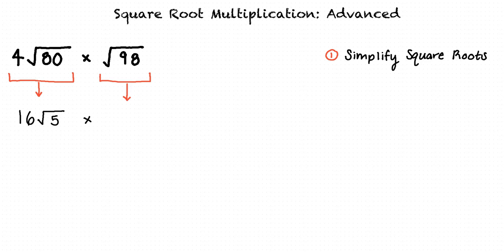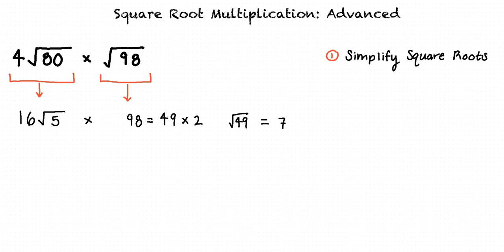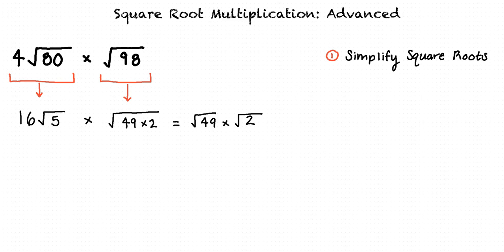To simplify the square root of 98, we will again look for the greatest factor of 98 that is a perfect square. Note that 98 equals 49 times 2, where 49 is a perfect square. Therefore, the square root of 98 is equivalent to the square root of 49 times 2, which equals the square root of 49 times the square root of 2, resulting in 7 times the square root of 2.